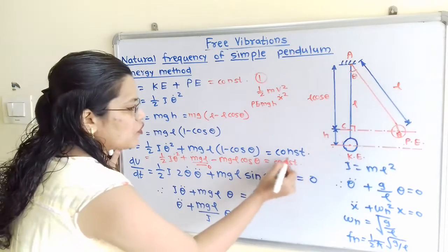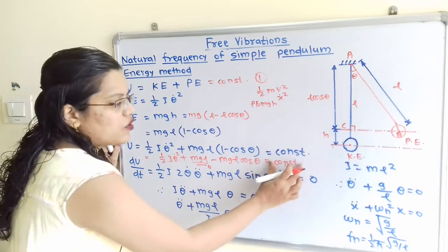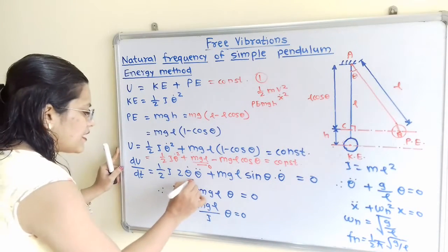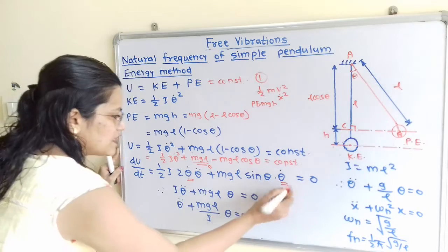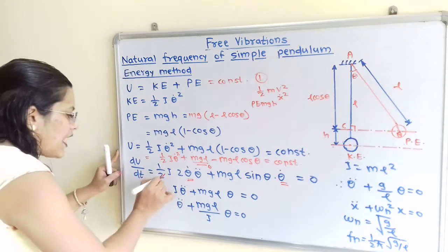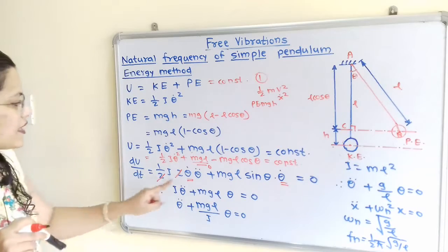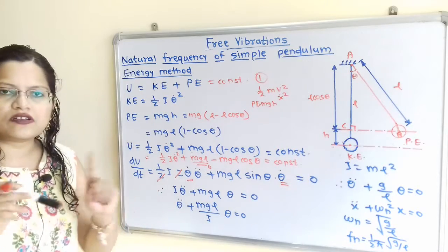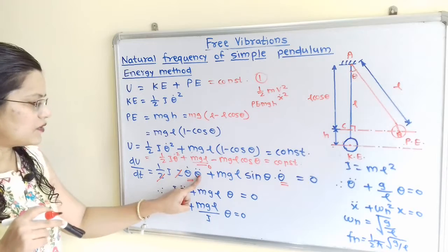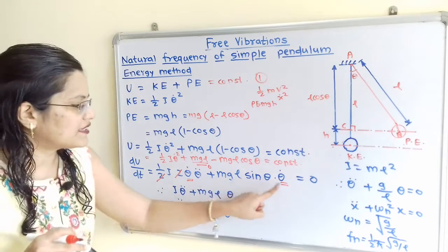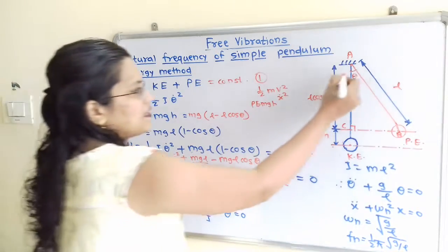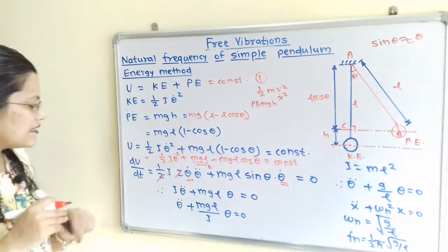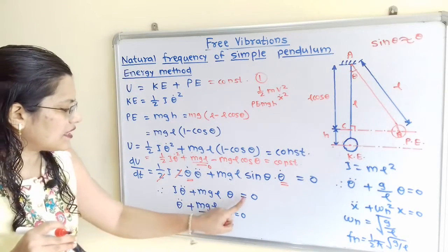Simplifying, theta-dot appears in both terms and can be taken outside the bracket. The one-half and 2 cancel. Dividing through by theta-dot, we get: I theta-double-dot plus MgL sin theta equals zero. Since theta is very small, sin theta is approximately equal to theta, so I theta-double-dot plus MgL theta equals zero.